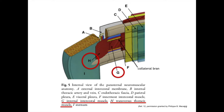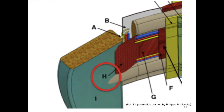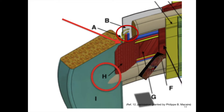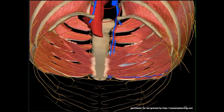A collateral branch also aids in supply and runs along the upper border of the rib. Here, much closer, you can see the transverse thoracic muscle with underneath the internal thoracic artery and vein, and also the perivascular sympathetic plexus around the internal thoracic artery.